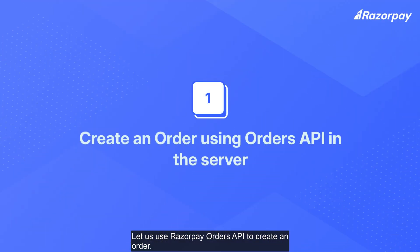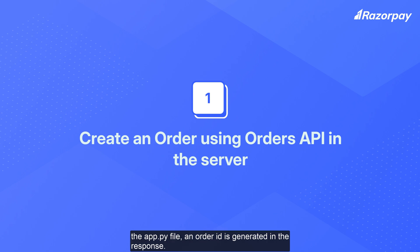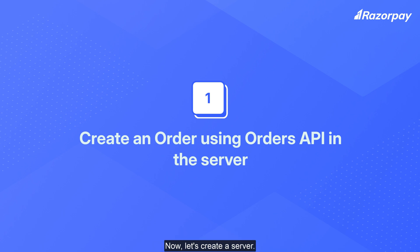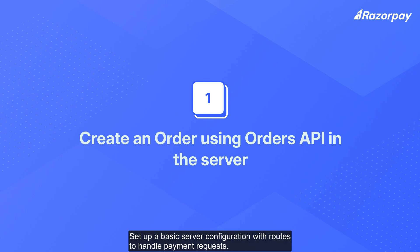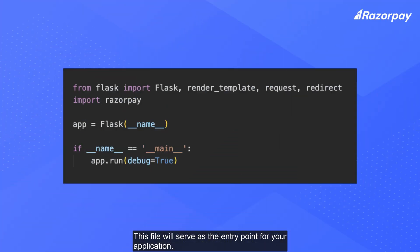Let us use the Razorpay Orders API to create an order. Order is an important step in the payment acceptance cycle. Once an order is created in the server, i.e. the app.py file, an order ID is generated in the response. You need to send this order ID to the checkout in the index.html file. Now let's create a server — set up a basic server configuration with routes to handle payment requests. Create a new file named app.py in your project directory. This file will serve as the entry point for your application.